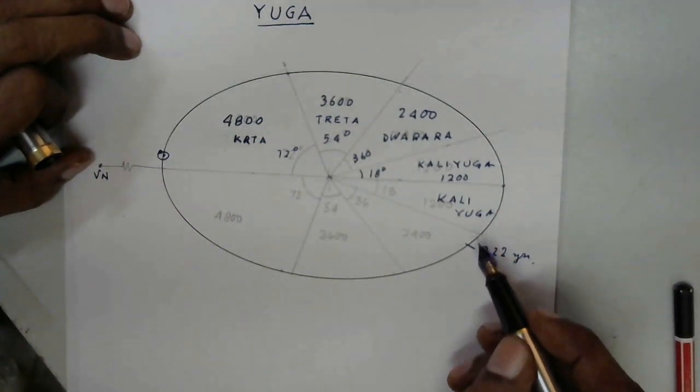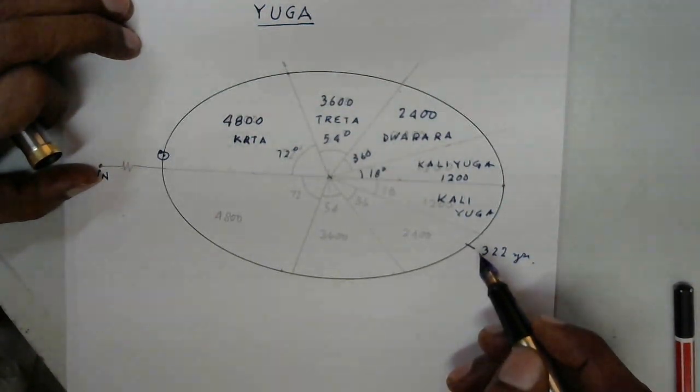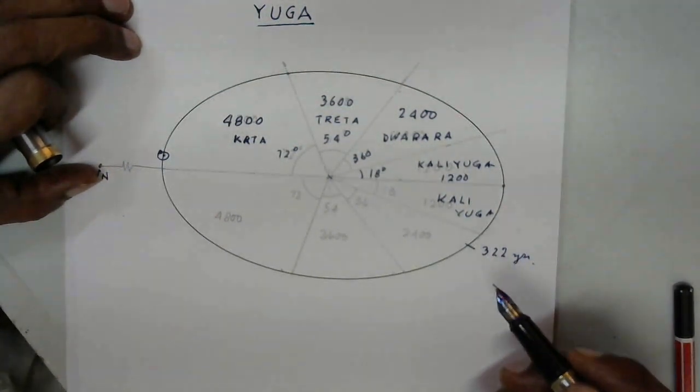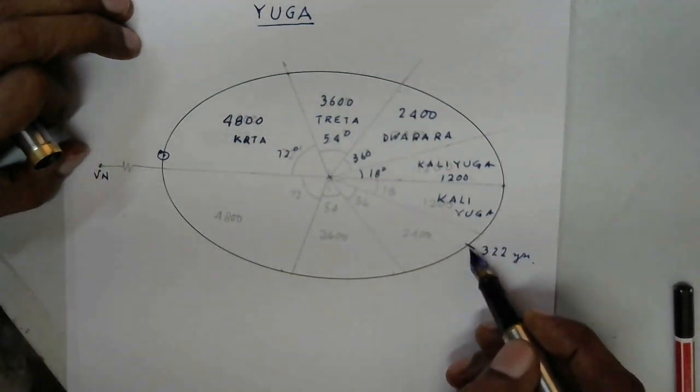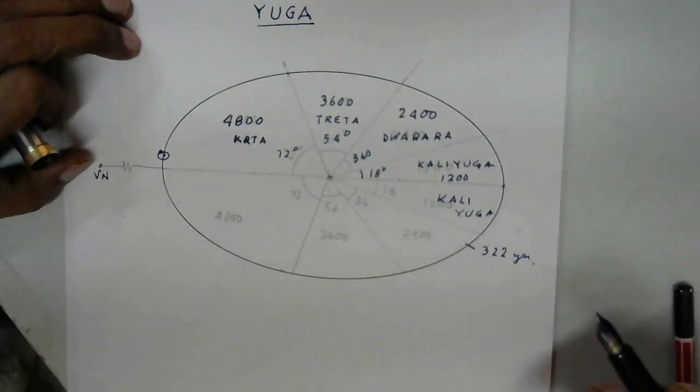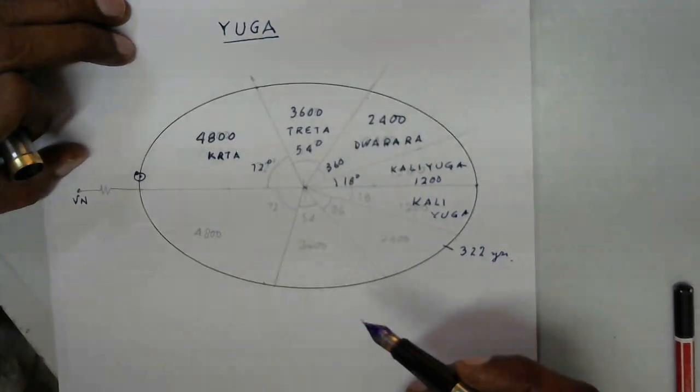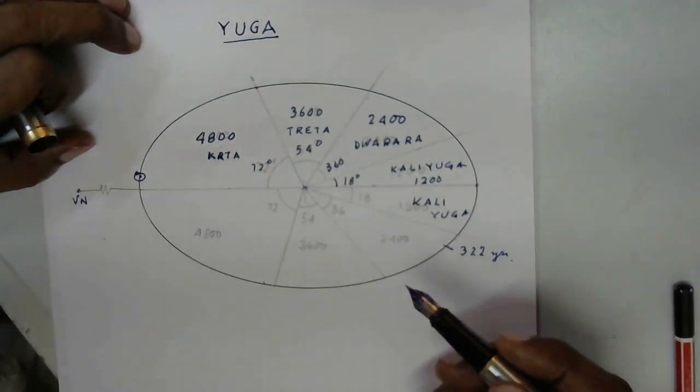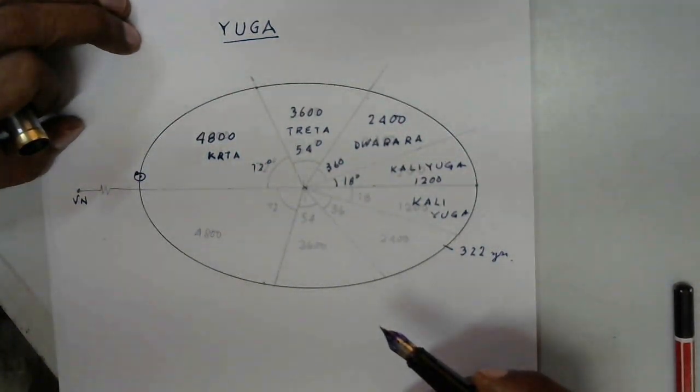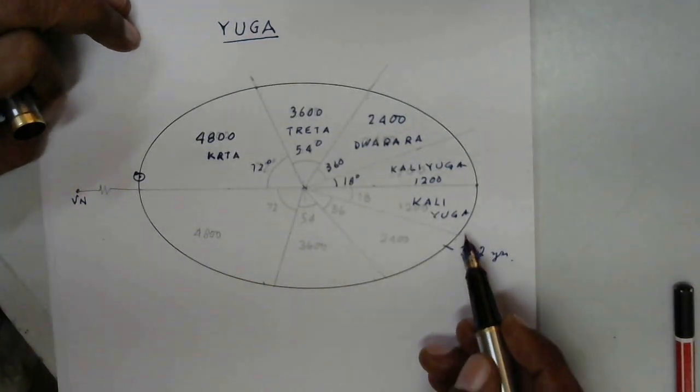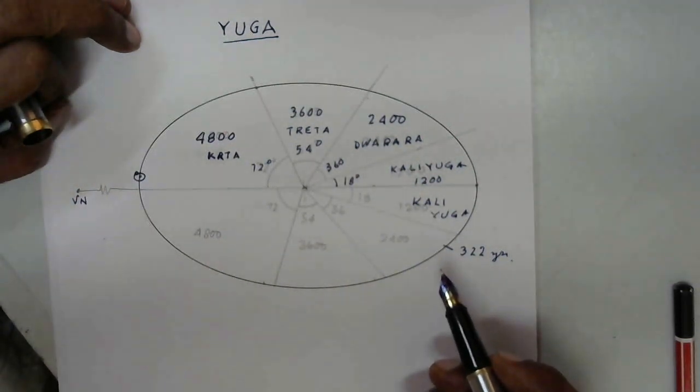For instance, Tycho Brahe doing the measurement of the position of planets, magnetic field being discovered, they all happened within 300 years. Definitely it is now a period of growth of intelligence. We can see in our modern world the progress is taking place so fast in scientific understanding, at least at the material level now becoming more and more on the advancing side towards the Vishnu Nabhi.